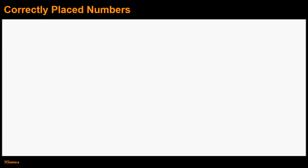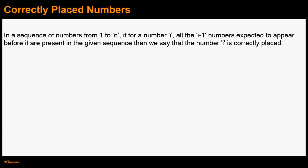Before jumping onto the algorithm, let's first define what correctly placed numbers are. In a sequence of numbers from 1 to n, if for number i, all the i-1 numbers expected to appear before it are present in the given sequence, then we say that the number i is correctly placed.